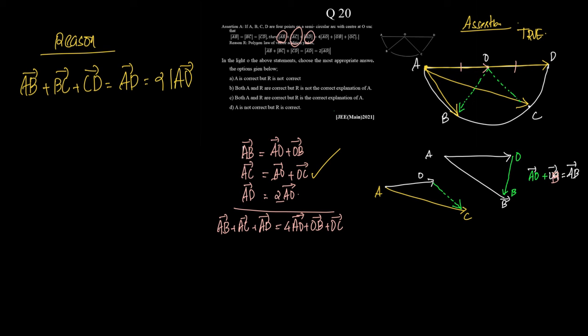See, no modulus again. So we know that AD is equal to 2 AO is correct. Now, all we need to find out is whether AB plus BC plus CD is equal to AD. Let us see that.